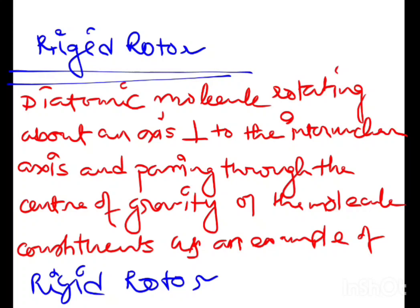Suppose any diatomic molecule AB is rotating about an axis, and this axis is perpendicular to the internuclear axis of AB and also passing through the center of gravity of the molecule. This generates the system as a rigid rotor.